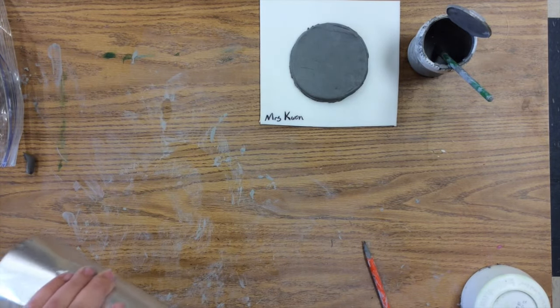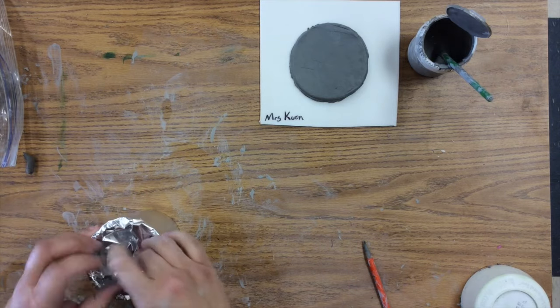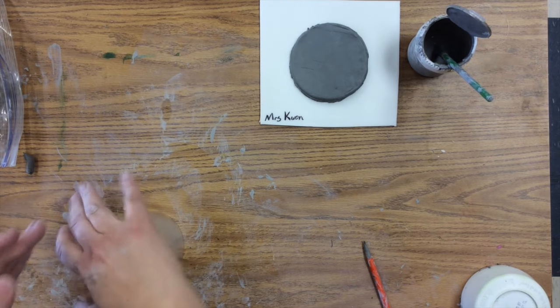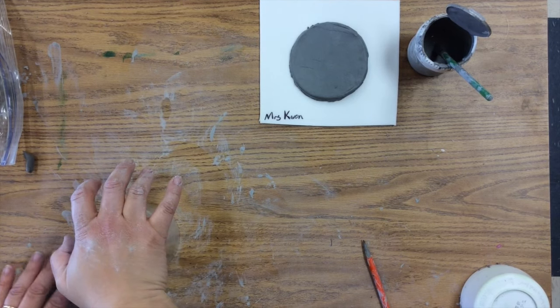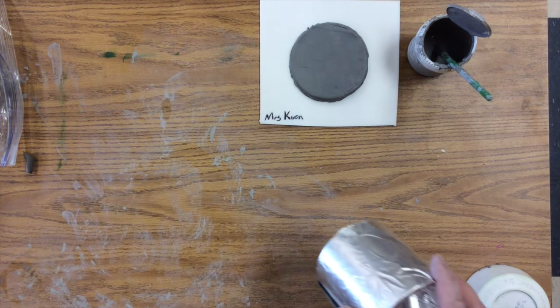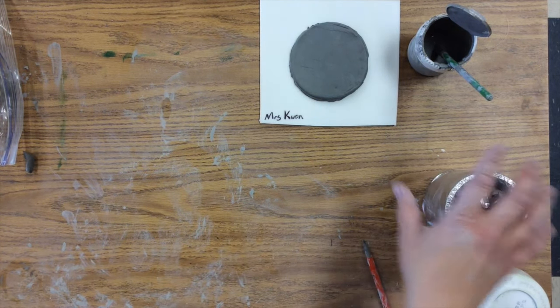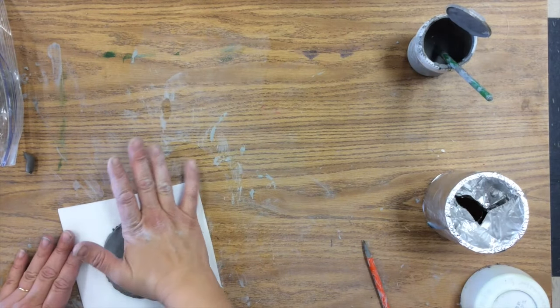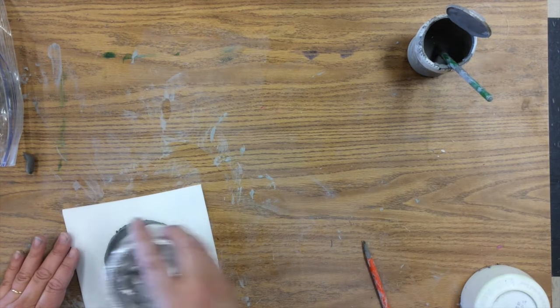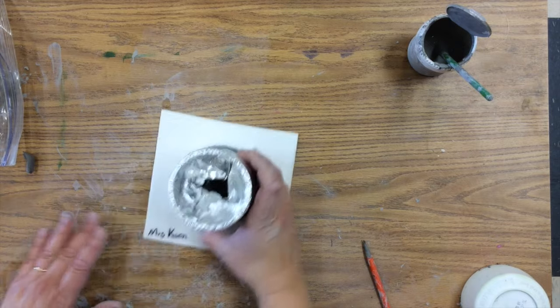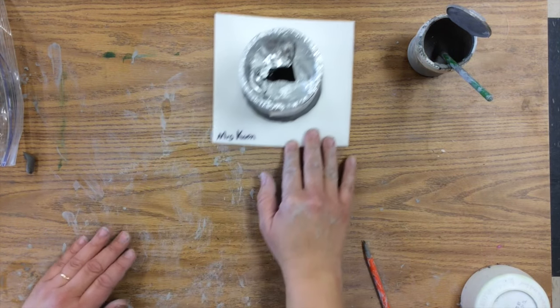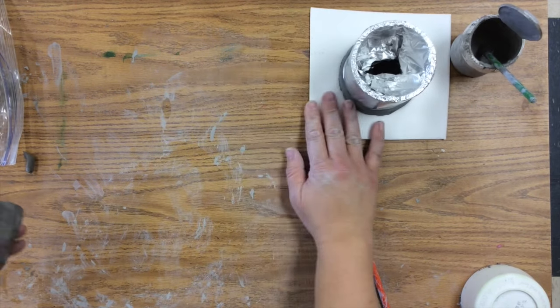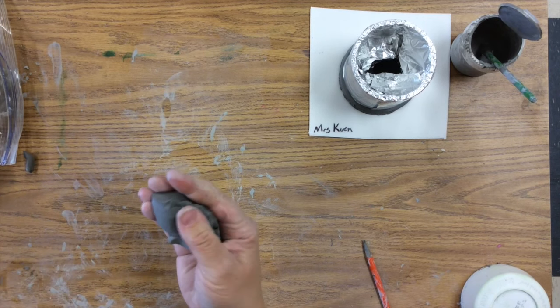You want to make sure that you smooth out all the aluminum foil so it's nice and smooth. Then you're going to gently place it on there. Don't push it in because if you push it in you might push it through. So just place it on there, and then we're going to start making coils.